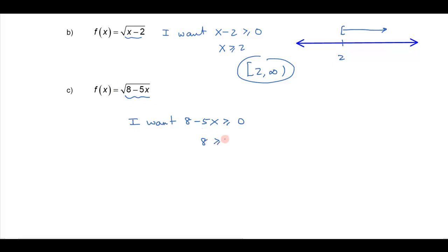So I want my eight greater than or equal to five x. And if you divide both sides by five, you'll get your x is less than or equal to eight fifths. So again, this is written sort of in Hebrew, let's turn around English, I want my x less than or equal to eight fifths.